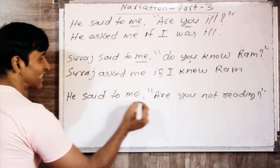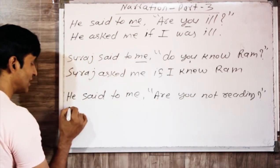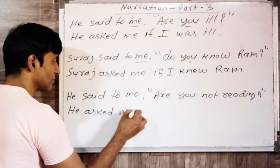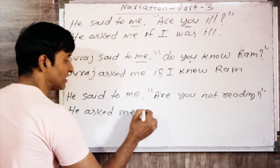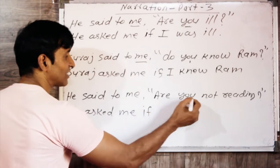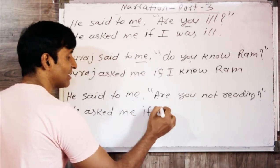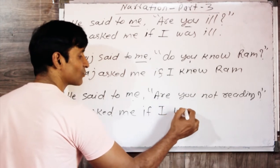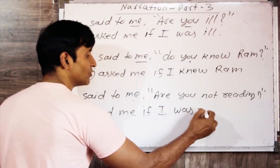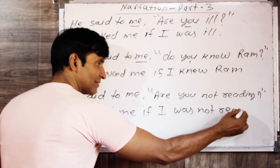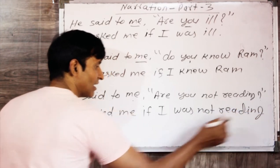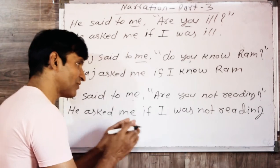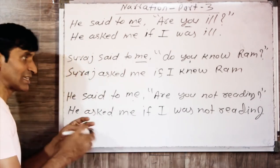He said to me, 'Are you not reading?' In indirect speech: He asked me if I was not reading. Here 'you' changes to 'I', and 'are' changes to 'was' — giving us: He asked me if I was not reading.